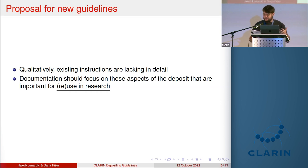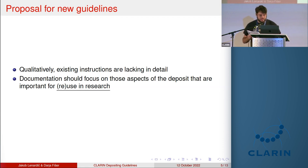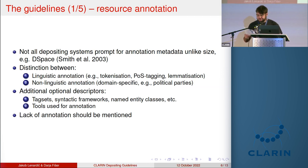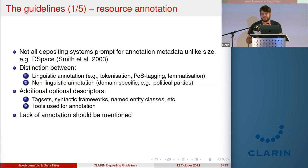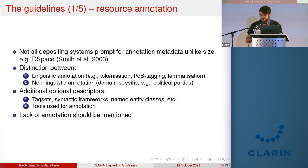Because of this, we propose a new set of depositing recommendations that would primarily focus on qualitative aspects important for reuse. For annotation, I should first mention that B centers using the DSpace system — such as the Slovenian and Czech consortia — don't provide the user with a special field for defining annotation during the submission process, in contrast to size, for which a special field does exist.